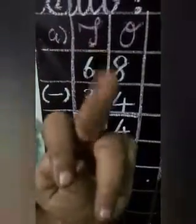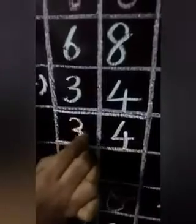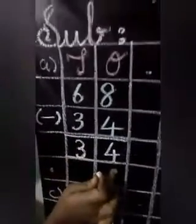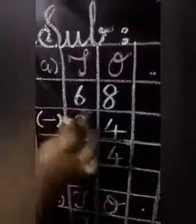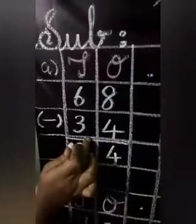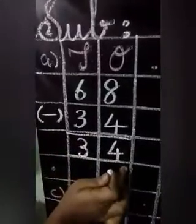Next, tens: 6 in the mind, 3 in the finger — before 6: 5, 4, 3 — so 6 minus 3 is equal to 3. Now we have 34. So 68 minus 34 is equal to 34.